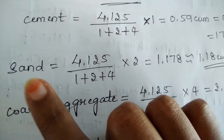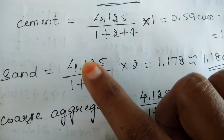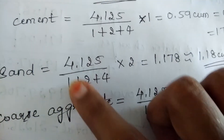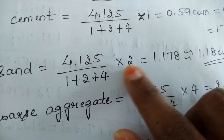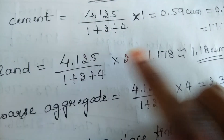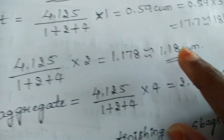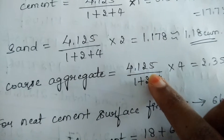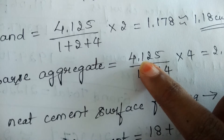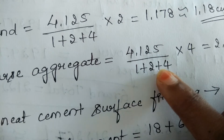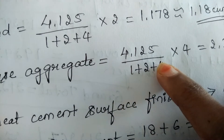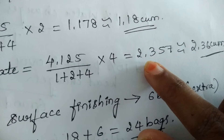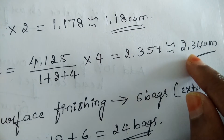Finding the next quantity — sand. Again we take dry volume 4.125 divided by 1+2+4, into the part of sand which is 2. On simplifying we get approximately 1.18 m³. Moving to coarse aggregate: again 4.125 divided by 1+2+4, into the part of coarse aggregate which is 4. On simplifying we get approximately 2.36 m³. So this gives you the quantities of all three materials.